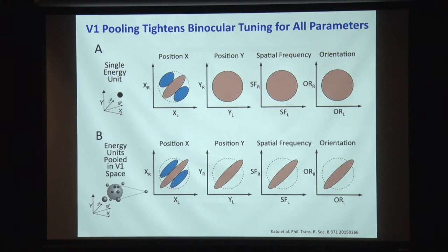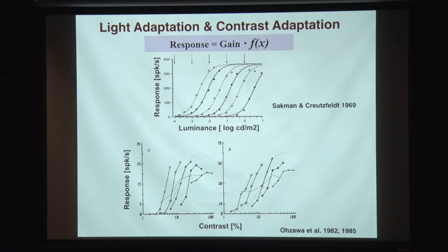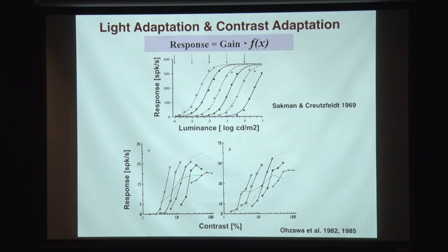Now let's talk about the second topic briefly. The visual system tries to use the two log units of neurons' dynamic range by light adaptation. This is from an old study by Sackman and Groitzfeld measuring retinal ganglion cells as the retinal luminance adaptation level changes — the response curve shifts along the log-luminance axis. Similarly, the cortical neuron's contrast response function shifts laterally along the log-contrast axis.